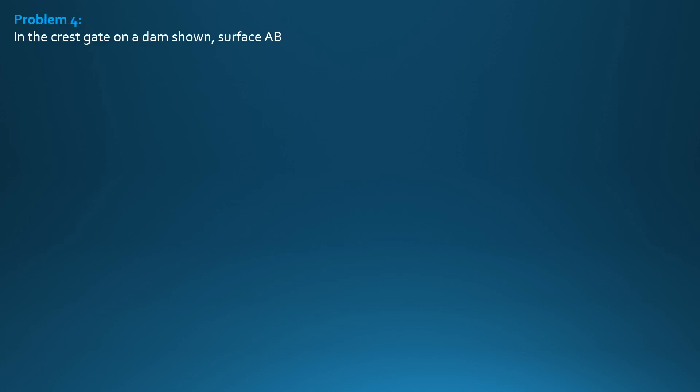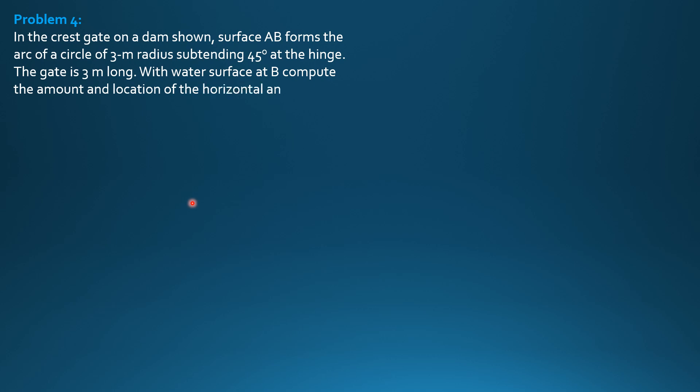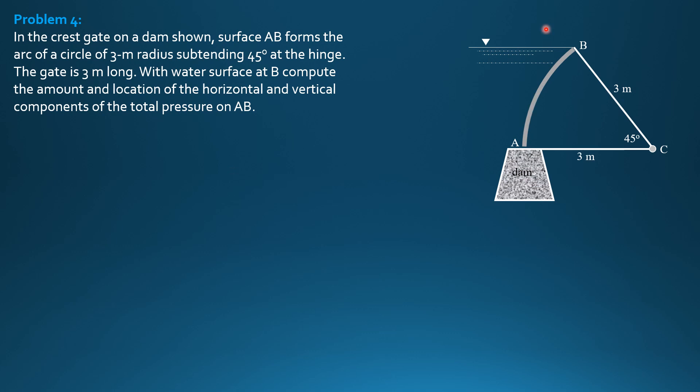In the crest gate on a dam shown, surface AB forms the arc of a circle of 3 meter radius, subtending 45 degrees at the hinge. The gate is 3 meters long. With water surface at B, compute the amount and location of the horizontal and vertical components of the total pressure on AB. So this is the figure.